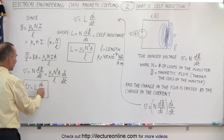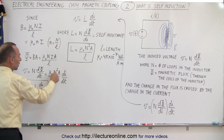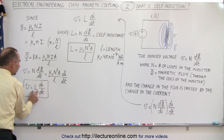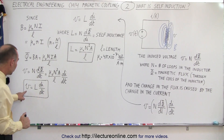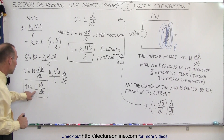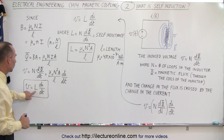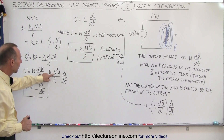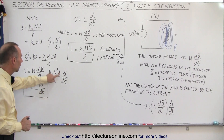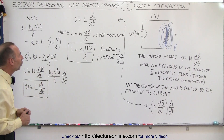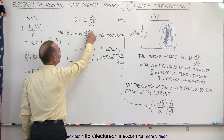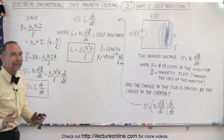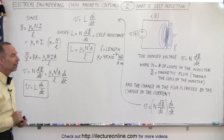You can see that this quantity — μ₀N²A over L — is indeed the self-inductance times di/dt. With an inductor in a circuit, the voltage induced is equal to the self-inductance times the change in current with respect to time. The self-inductance can be expressed as μ₀N²A/L using the physical dimensions of the coil, or in terms of N times the change in flux with respect to the change in current. And that's how we define self-inductance.